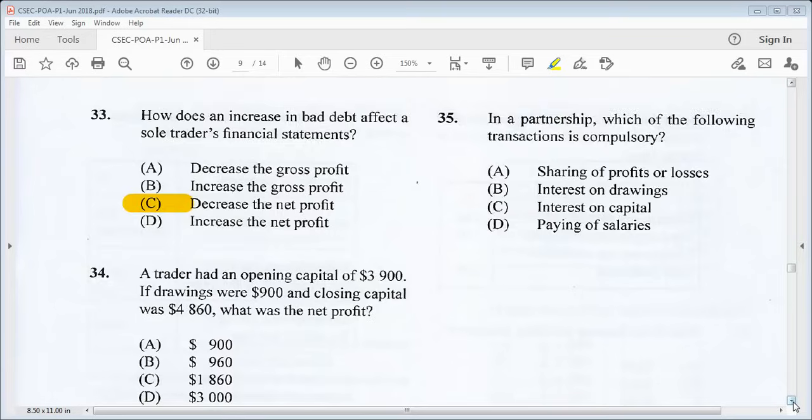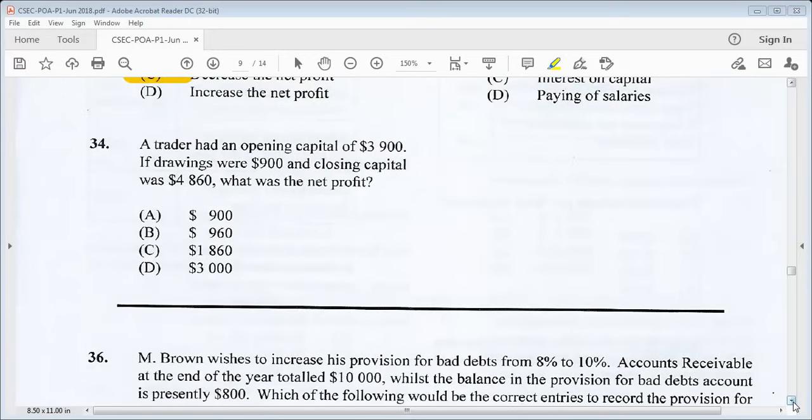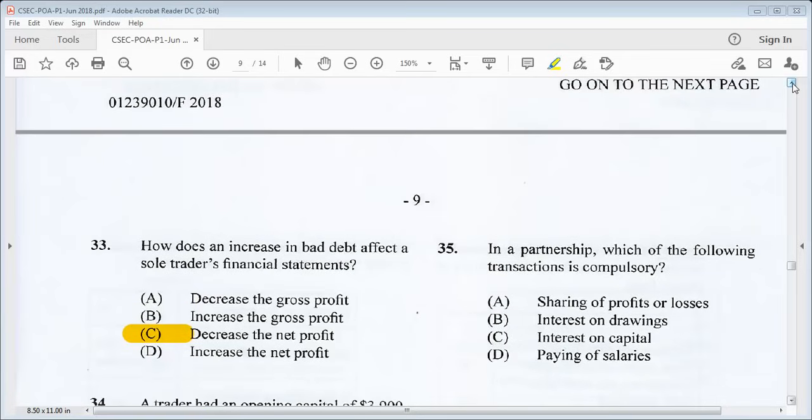34 says, a trader had an opening capital of $3,900, drawings were $900 and closing capital was $4,860. What was the net profit? C should be our answer, $1,860. That one is another repeat question. Let's go to 35. In a partnership, which of the following transactions is compulsory? We know it is A, sharing of profits or losses.